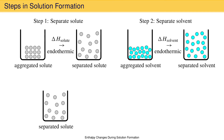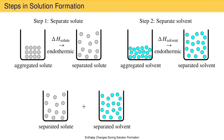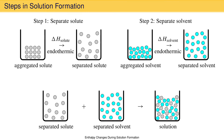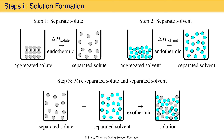We now take the separated solute particles and the separated solvent particles and allow them to mix to find their lowest energy. This is step three, and the result is the solution. This process is always exothermic because interactions form between the particles of the solute and solvent due to intermolecular attractions. Formation of these interactions, like the formation of bonds, is always exothermic. The symbol for this is delta H subscript mix. The stronger the mutual interaction between the solute and solvent particles, the more negative the value of delta H mix.